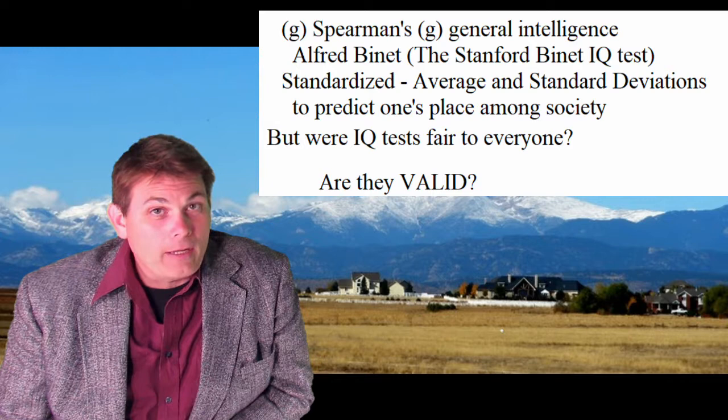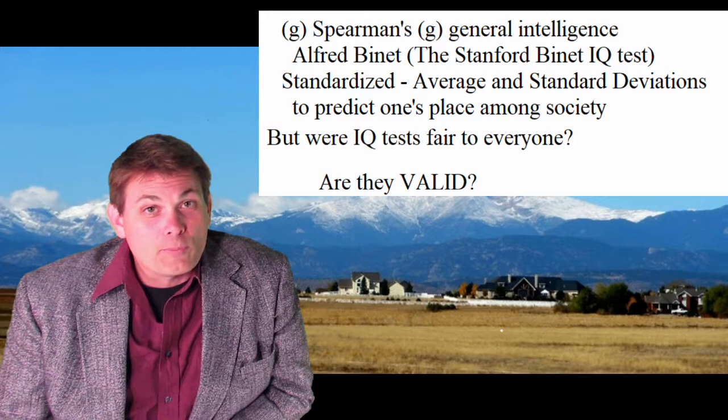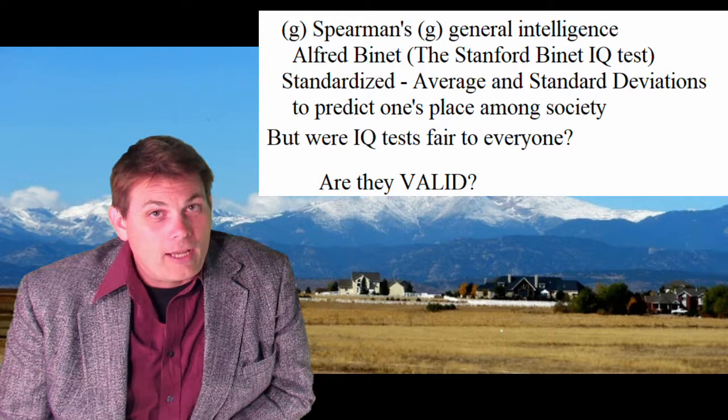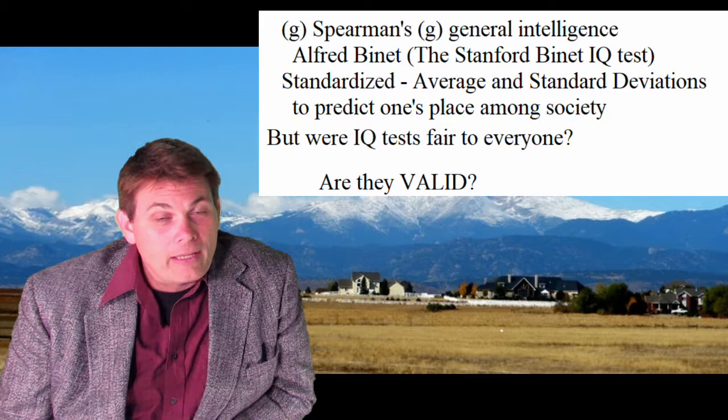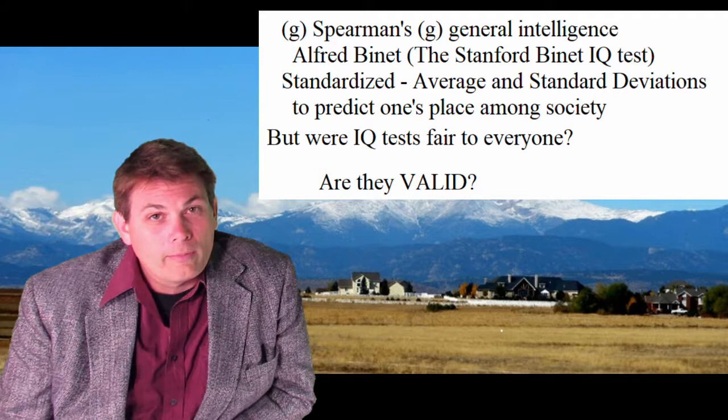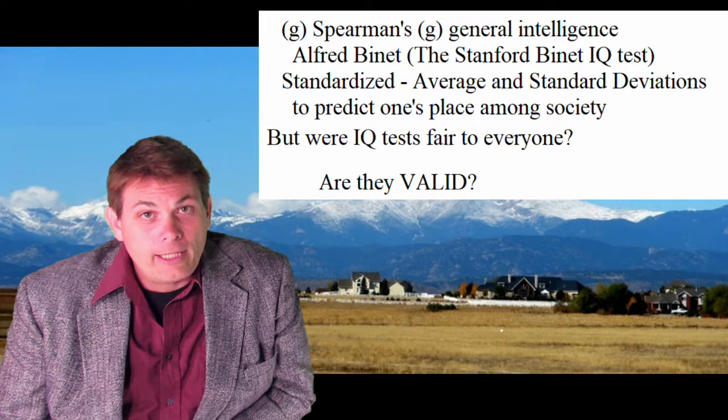But if there's one thing we know about human beings, it's that we tend to believe we're all above average. So the average belief that someone has in their IQ will be about 115. But the average IQ has to be 100, or it will be re-normed — those numbers will be recalculated so that the average will be 100. Anything below 100 will be below average, anything above 100 will be above average, and we have standard deviations for that.